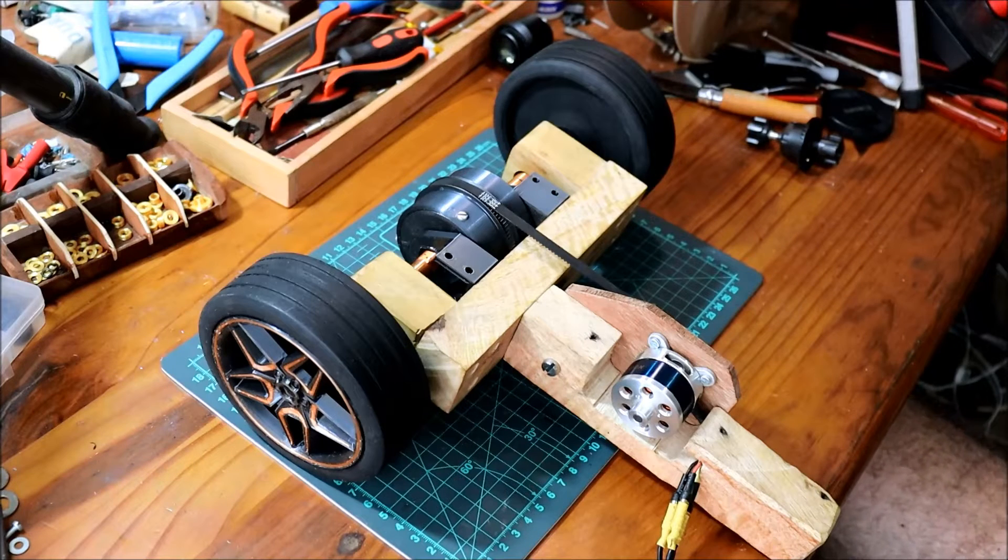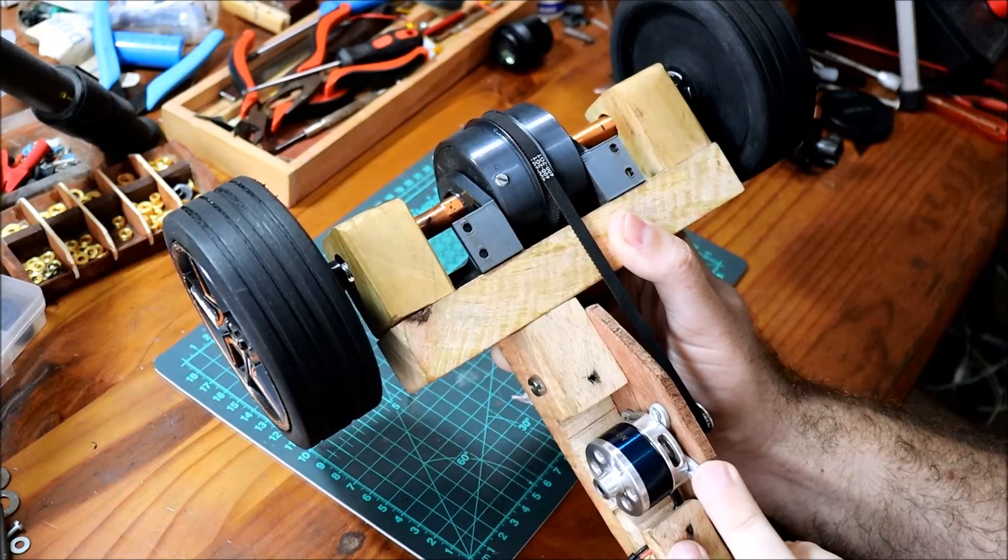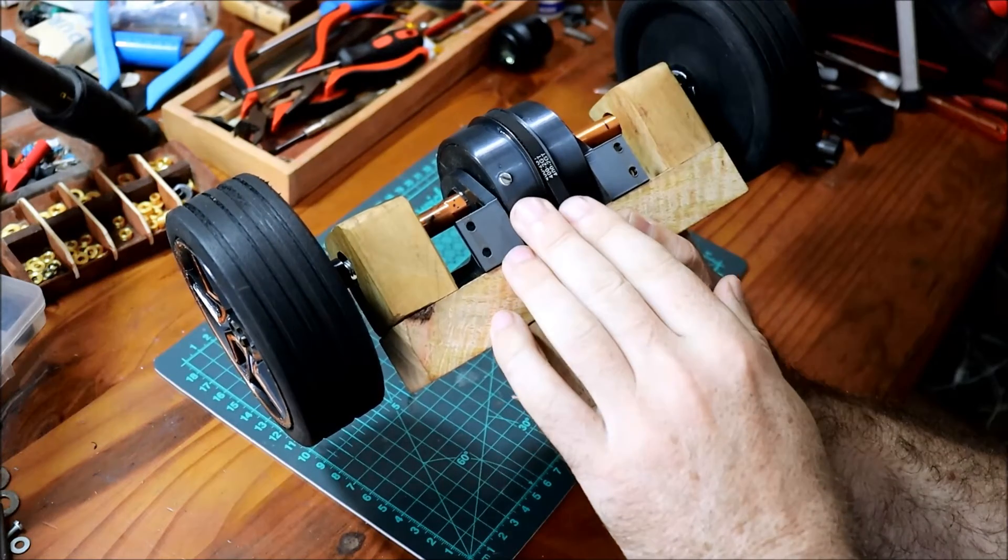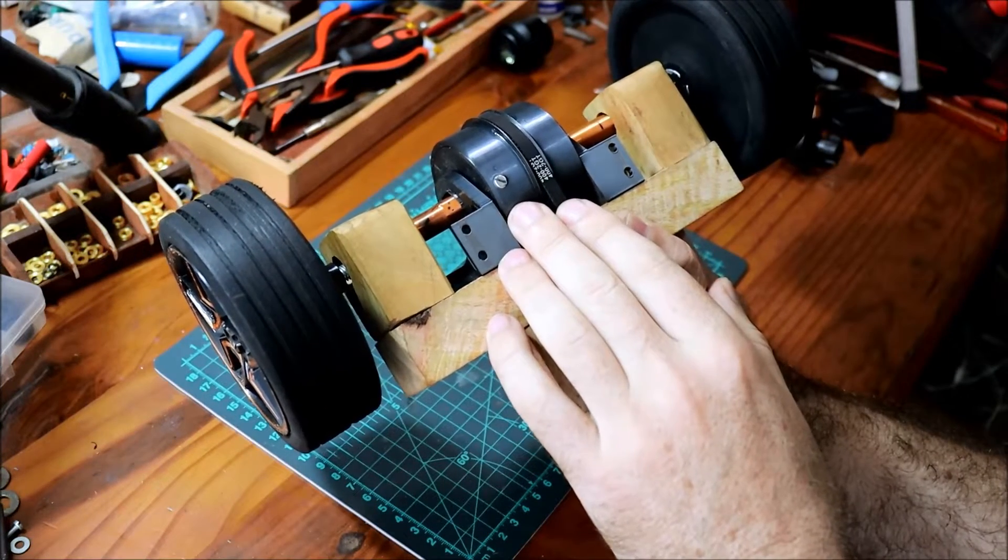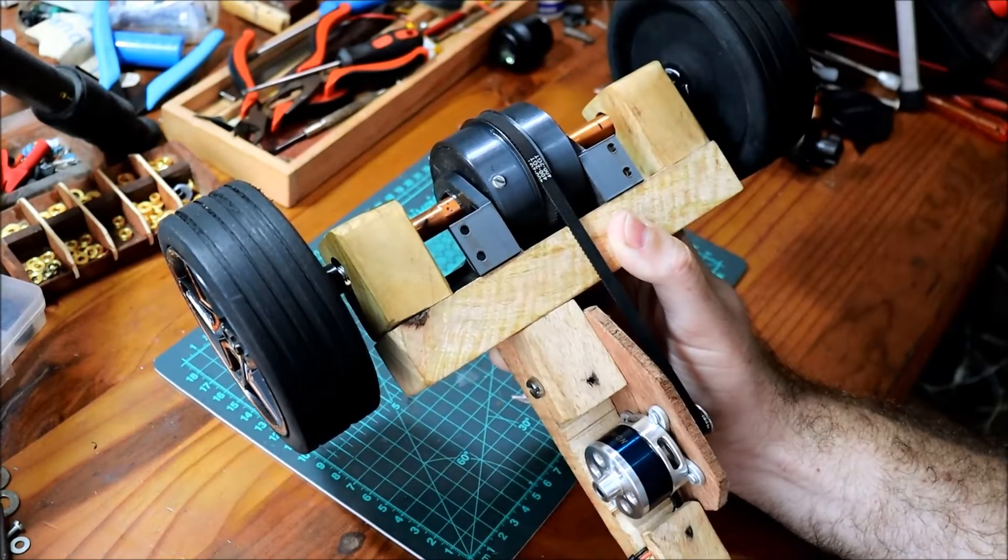This is a simple model of what you will find on many rear wheel drive vehicles. A single source of power applies torque to this contraption over here called a differential. The differential splits that power between the two rear wheels for propulsion.